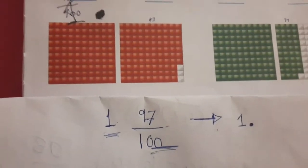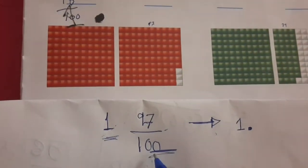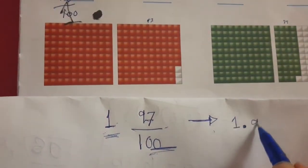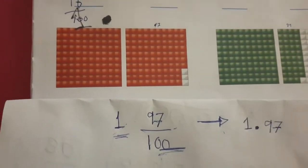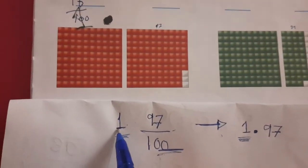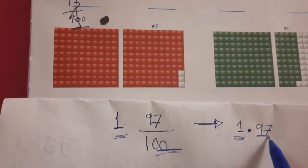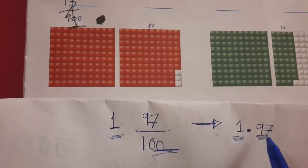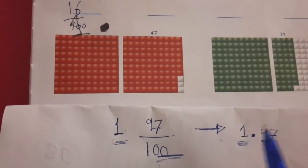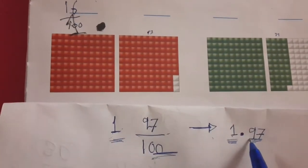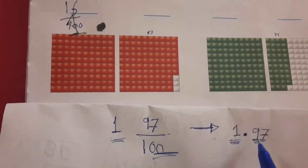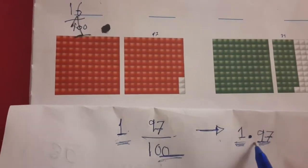How many colored parts are there? We have ninety-seven. After decimal point, write ninety-seven. In the ones place we have whole number one, and after decimal point we have ninety-seven colored parts. This is one and ninety-seven hundredths.